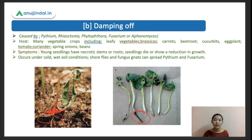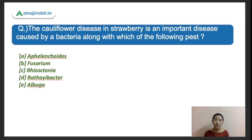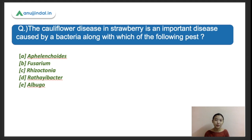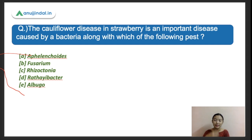The last question: the cauliflower disease in strawberries is an important disease caused by a bacterium, along with which of the following pests? Options are A - Aphelenchoides, B - Fusarium, C - Rhizoctonia, D - Agrobacterium, E - Albigo. This is a tricky question - if you guys have any guesses or ideas, drop them in the comment section.